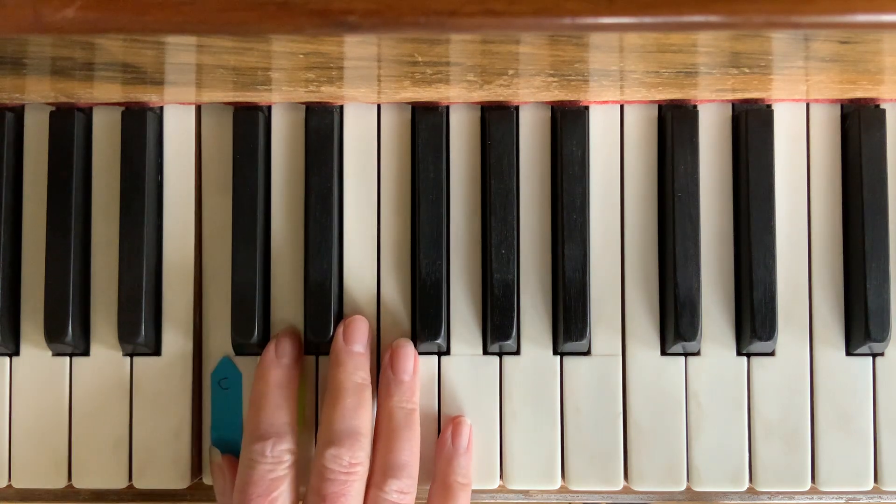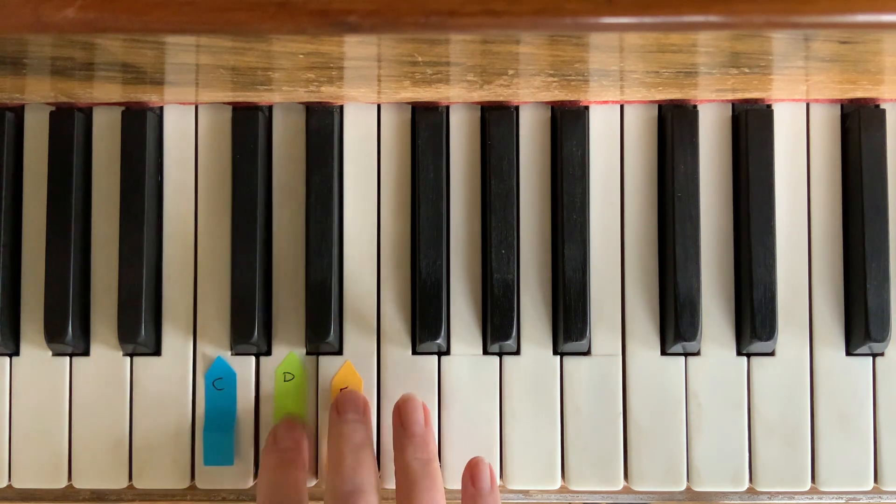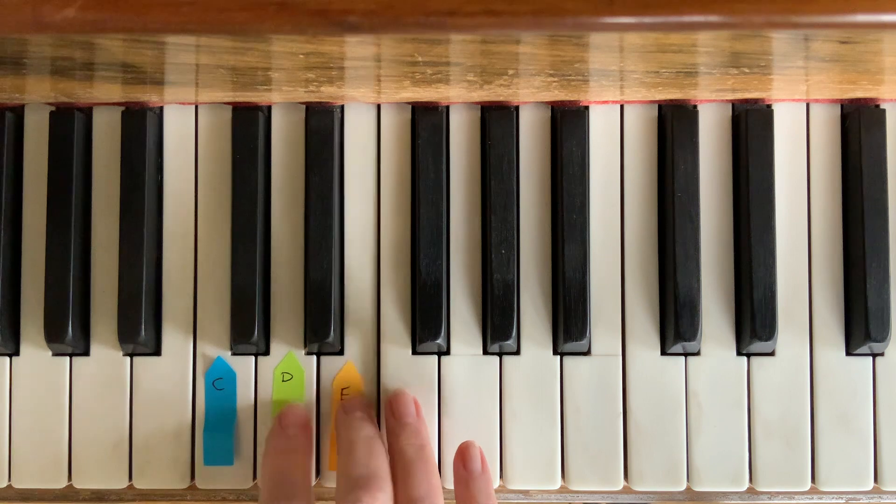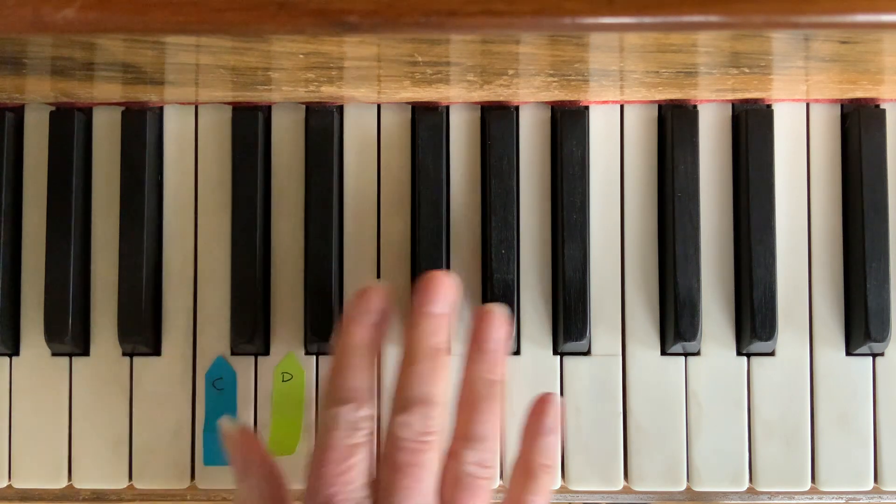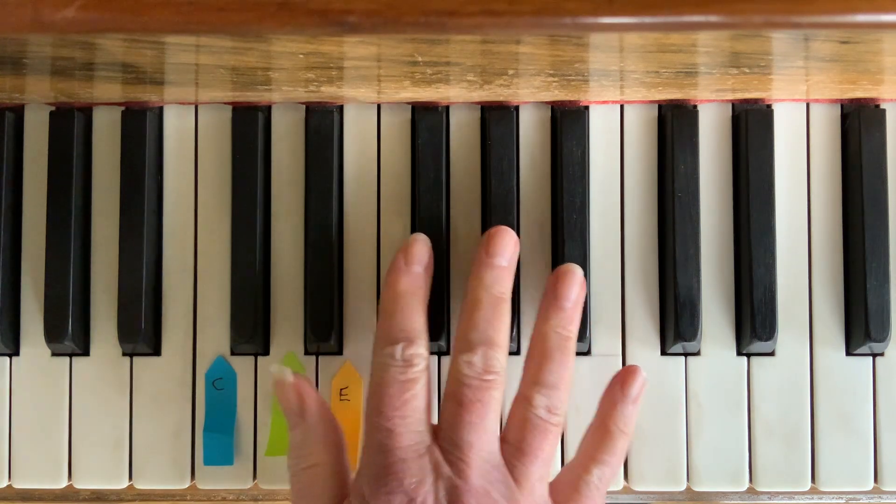So we have now learned C, D, and E. Remember, these are all based around where we have a pair of black notes, not where we have three.